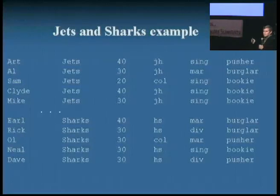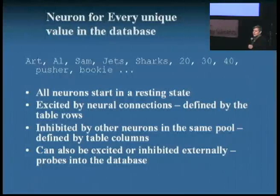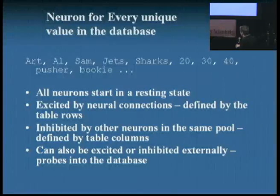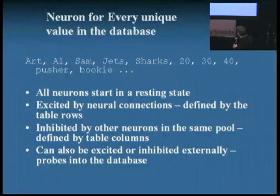There is a neuron for every unique value in the database. So Art gets his own neuron, so does Al. But 20 years old gets a neuron, too. So in the field of age, we take all of the unique values, 20, 30, and 40, and each one of them gets a neuron. All neurons start at a resting state. The way they get excited is if they're on the same table row, if you light up one, anything that's connected to it gets lit up, too. Things in the same column inhibit one another. If we excite the 20-year-olds, we'd like to inhibit the 30-year-olds and 40-year-olds. This is the competition part of the IAC.